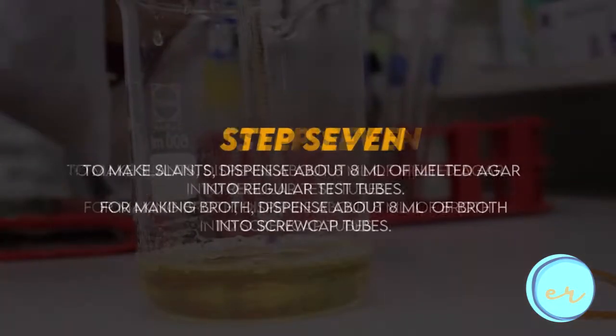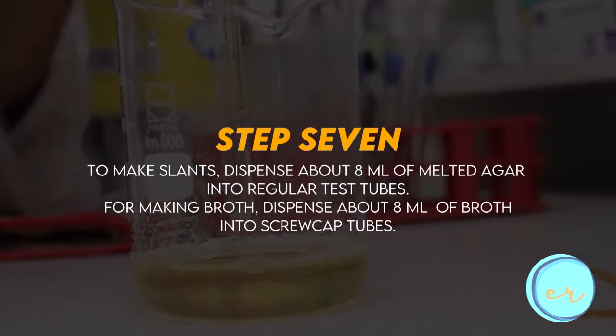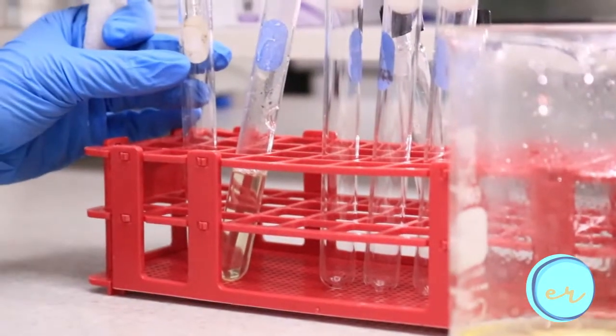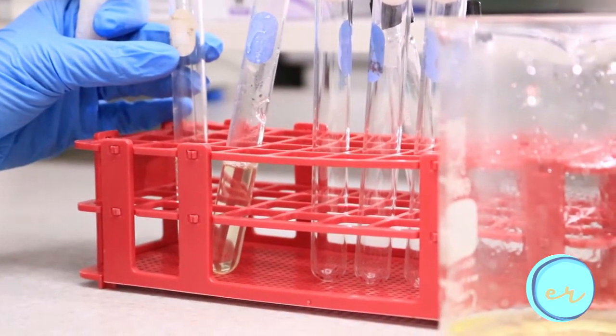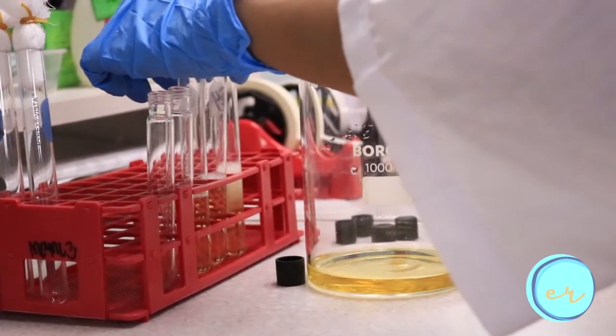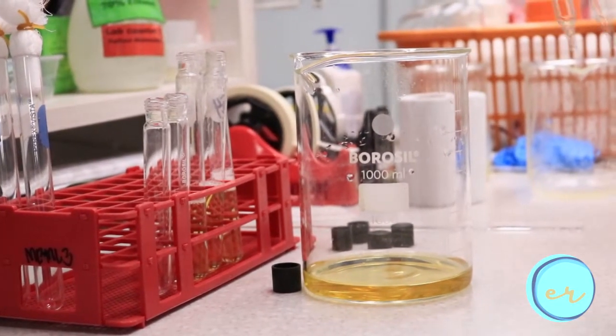For making slants, dispense about 8 ml melted agar per test tube using a 10 ml pipette or a glass syringe and place the cotton plug. For making broth, dispense around 8 ml of the melted medium into the tubes.